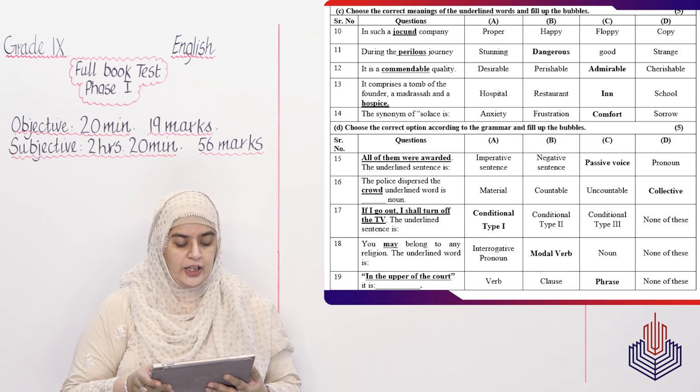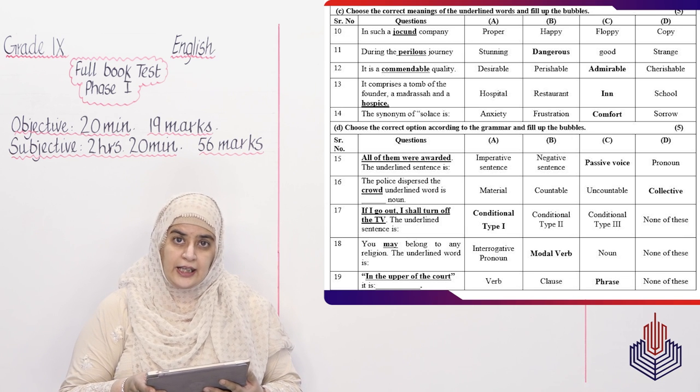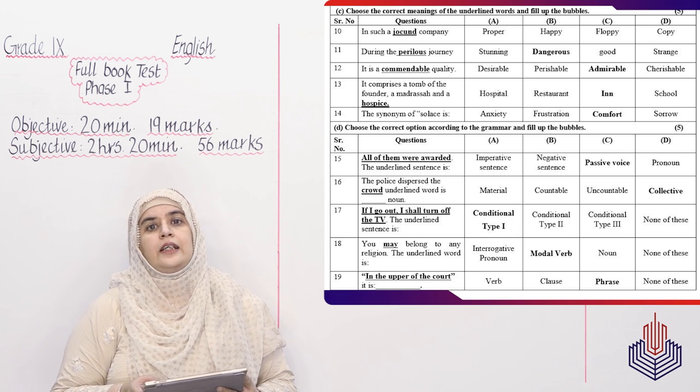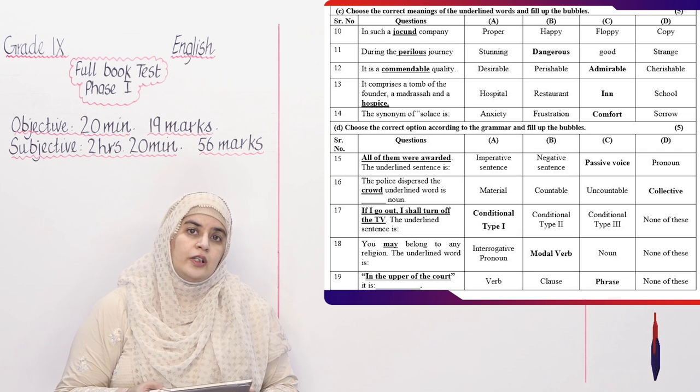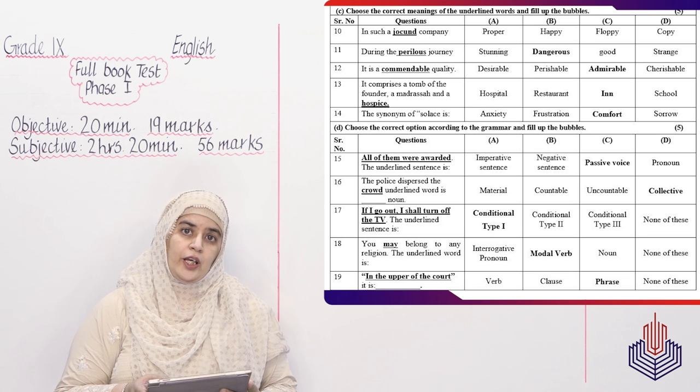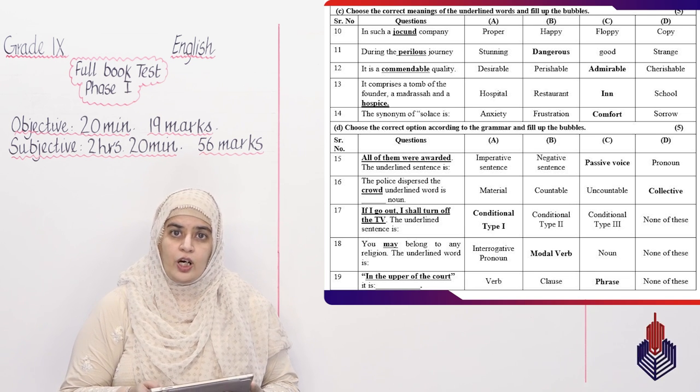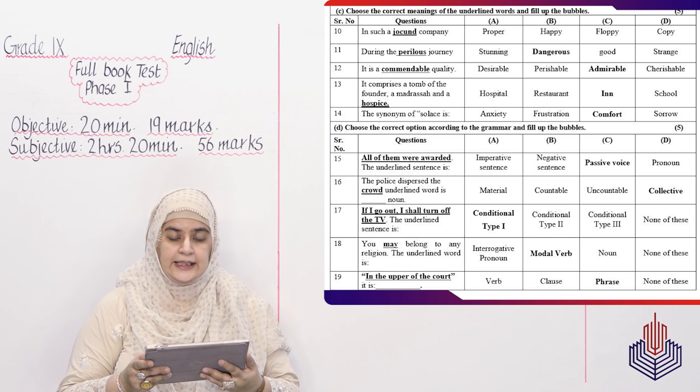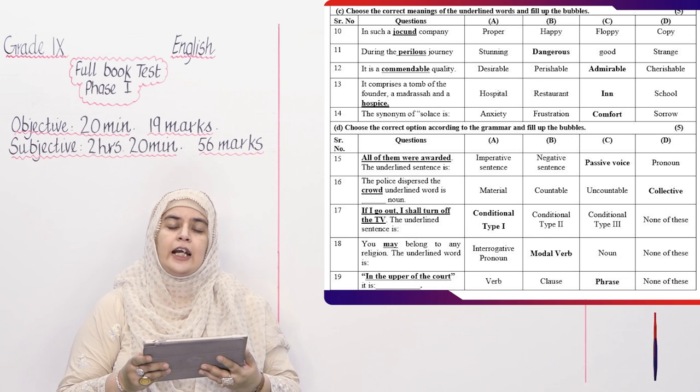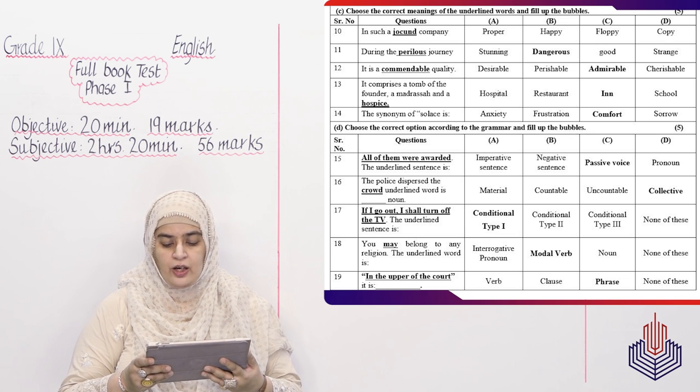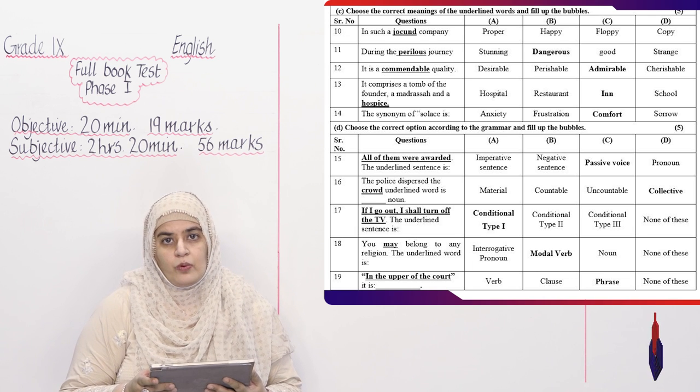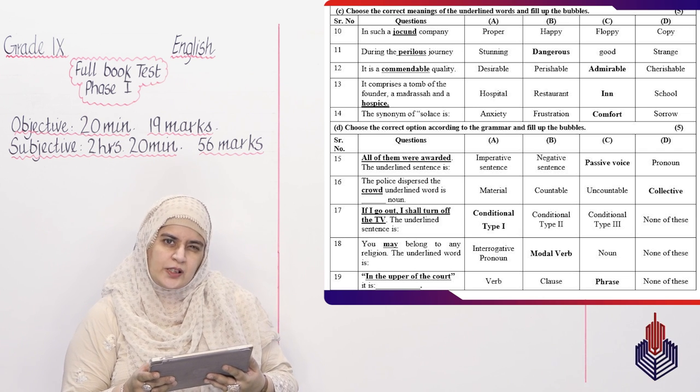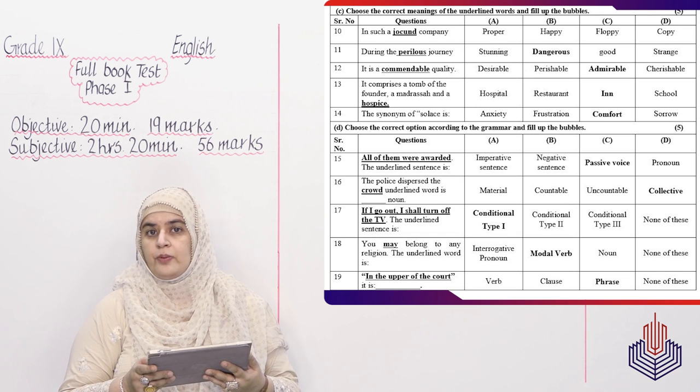MCQ number 17: If I go out, I shall turn off the TV. And you have to tell whether this sentence is conditional type 1, conditional type 2, conditional type 3, or none of these. Ye conditional type 1 hai. Possible condition, yaani ke jo qareeb future mein ho sakta hai. Yaani ke agar main bahar gaya, toh main light switch off kar dunga. Conditional type 1. Option A is the right answer. MCQ number 18: You may belong to any religion. And the underlined word is may. Which can be interrogative, pronoun, modal verb, noun ya none of these. Toh beta ye modal verb hai. Hameh pata hai ke modal verbs batate hai moods. Toh may bata raha hai ke shayad, maybe ho sakta hai. Ye aapka mood bata raha hai. Toh ye aapka option B, modal verb hai.